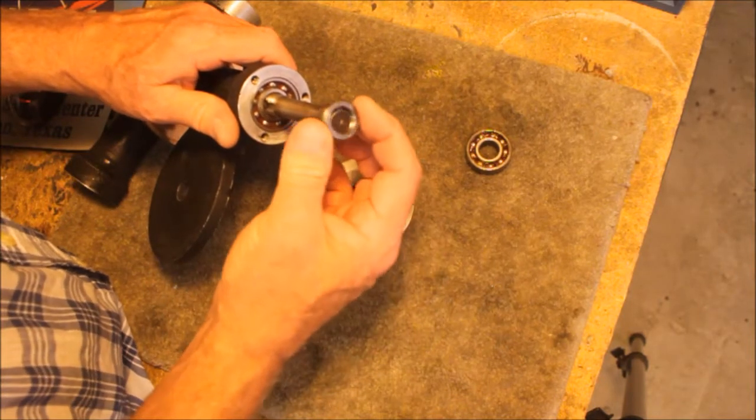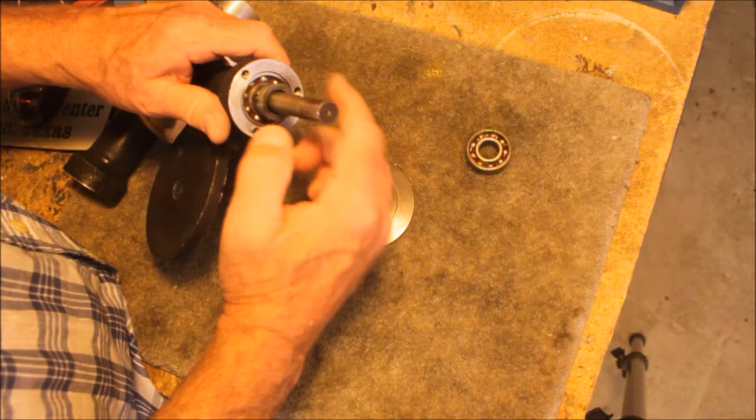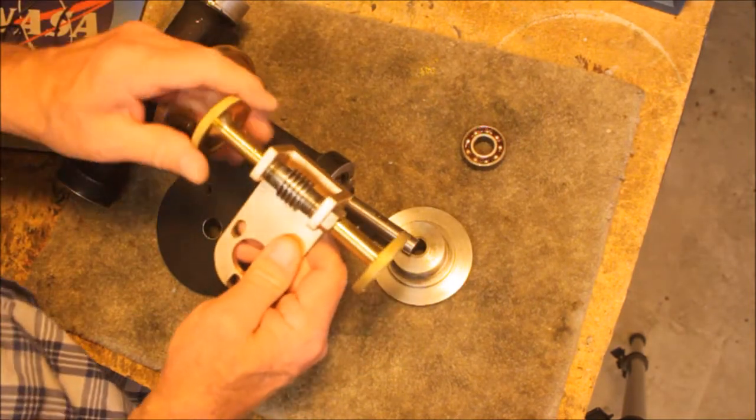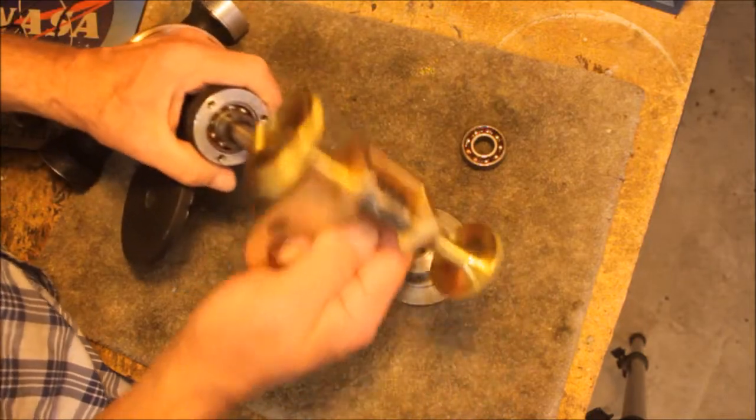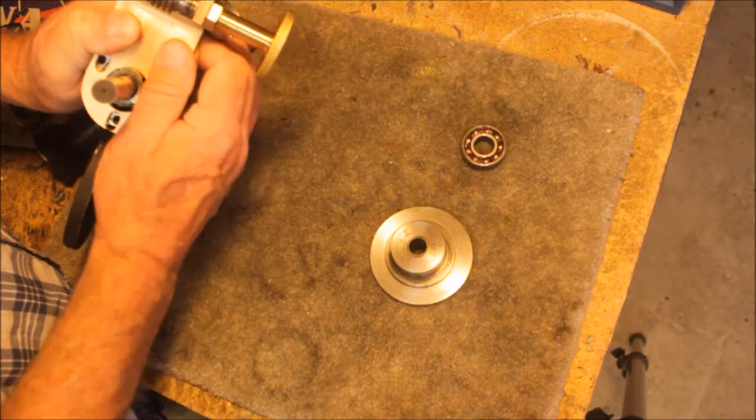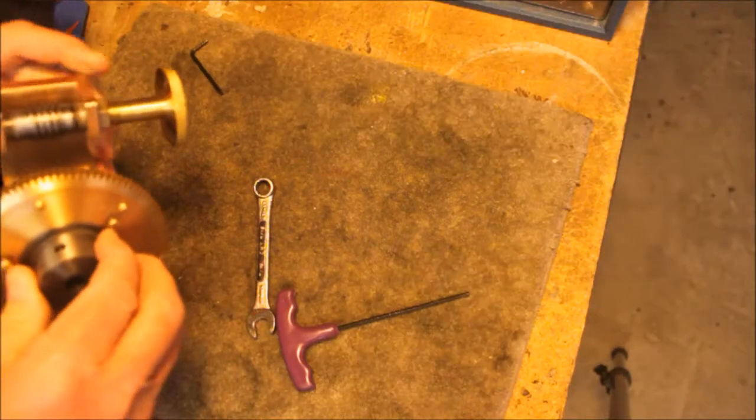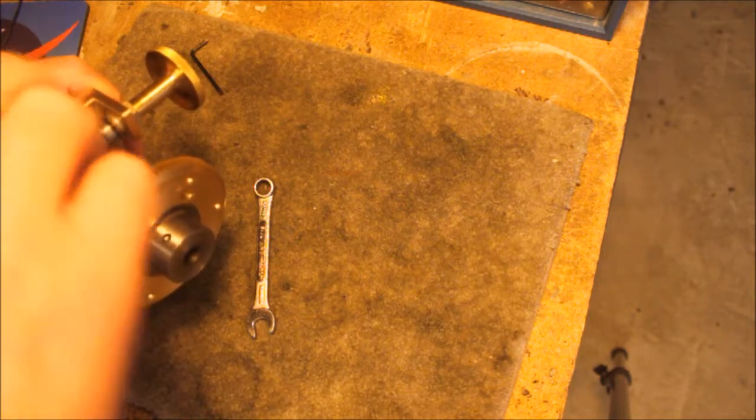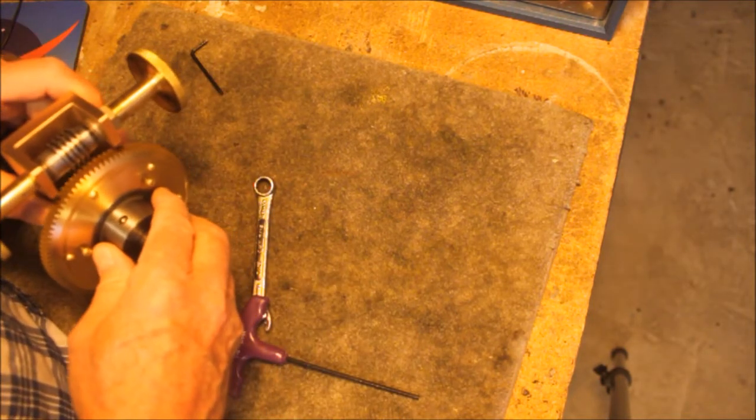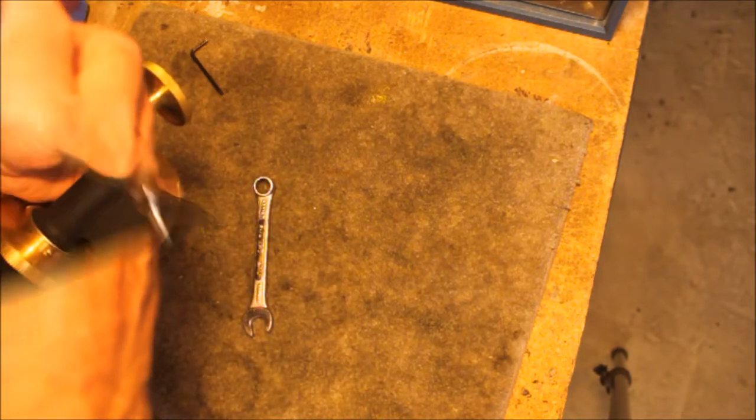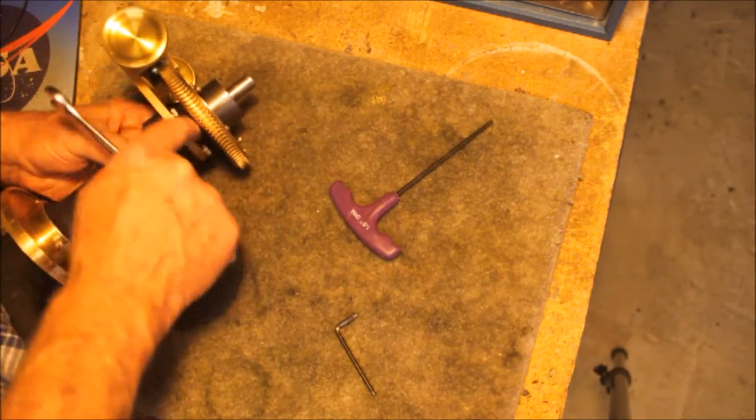And now the next bit would be to screw this on. So this is going to go on here like that. Next thing that's going to happen is this assembly is going to go over that and sit like so. Slide this on so that it matches. Now let me put a wrench back here and tighten this thing down.